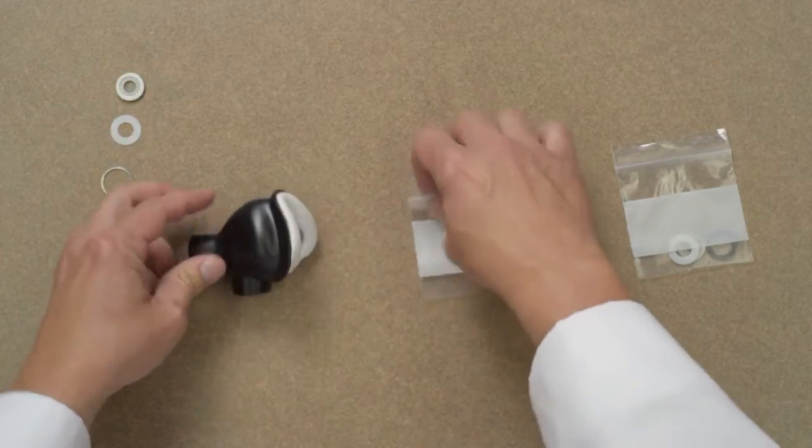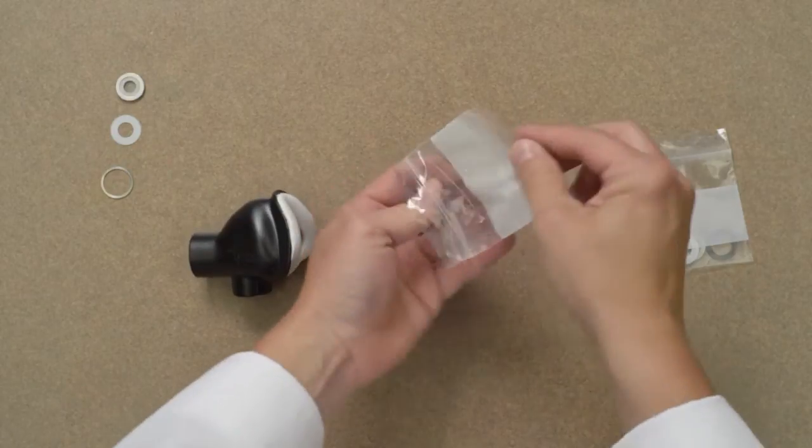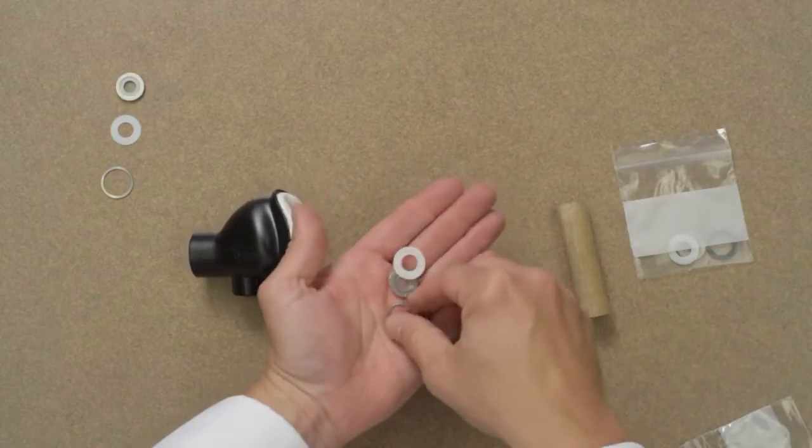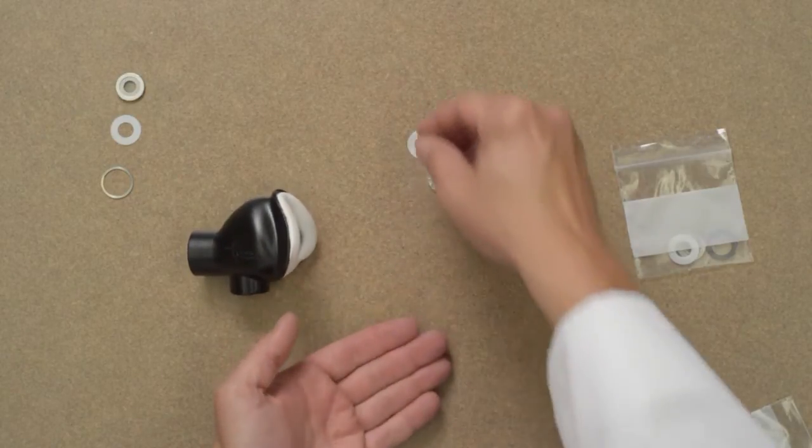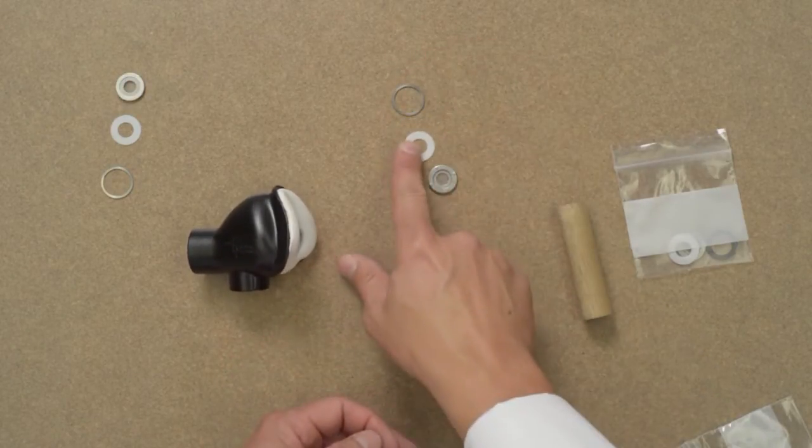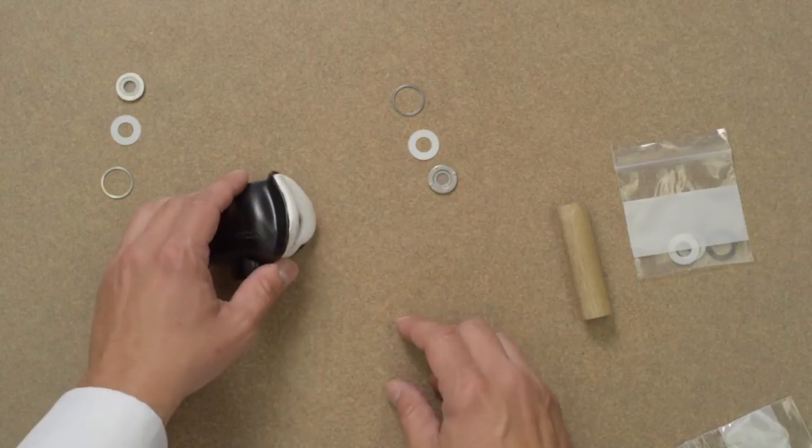Next lay out the parts for the new inhale check valve. We have three parts for the inhale check valve: the check valve body, a Teflon washer, and a retainer spring washer. These parts should be inserted into the inhale port in this order.